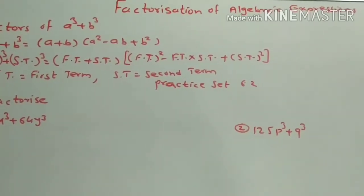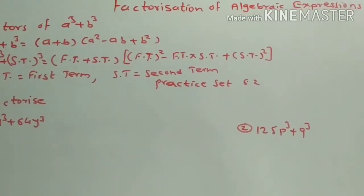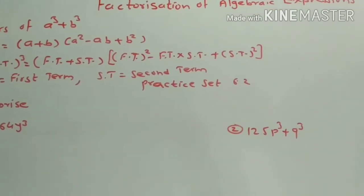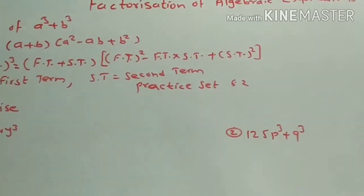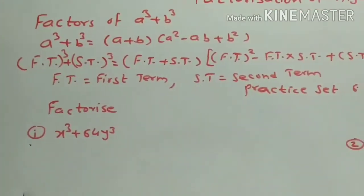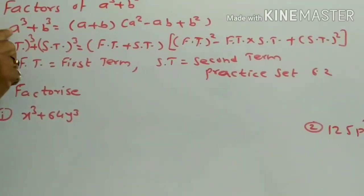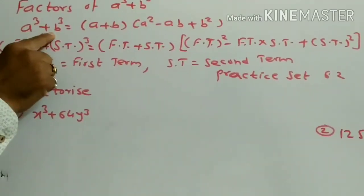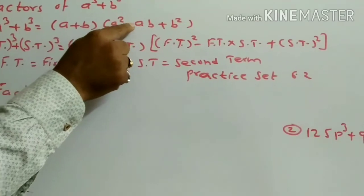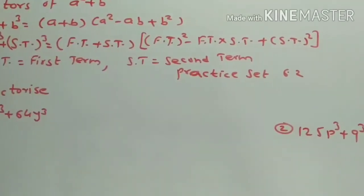Students, today we will start with the next topic of the chapter: Factorization of Algebraic Expressions. Factors of the type a cube plus b cube. a cube plus b cube is equal to a plus b into a square minus ab plus b square.